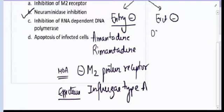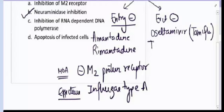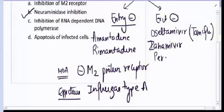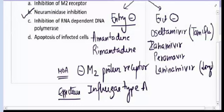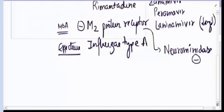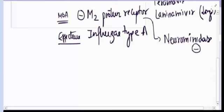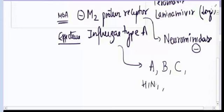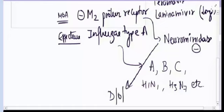Exit inhibitors include Oseltamivir (brand name Tamiflu), Zanamivir, Peramivir, and Laninamivir. They inhibit the release of virus and are effective against all influenza A, B, C, H1N1, H5N1, etc. Neuraminidase inhibitors are the drug of choice for influenza — both for treatment as well as prophylaxis. The answer for question number three is Oseltamivir is a neuraminidase inhibitor.